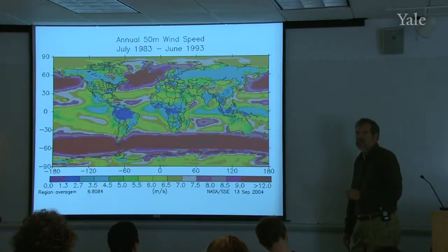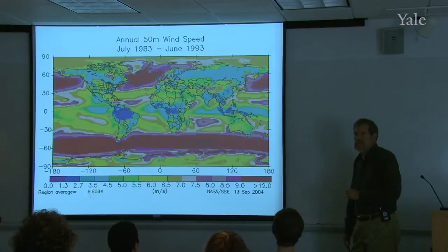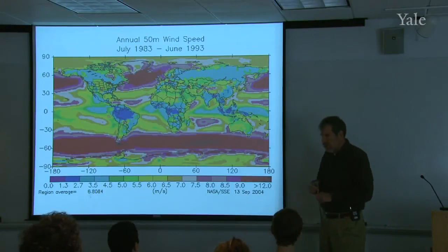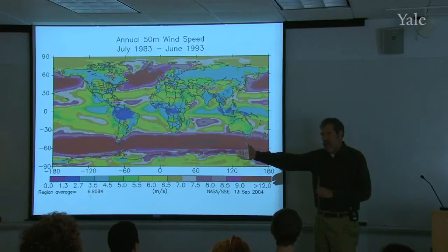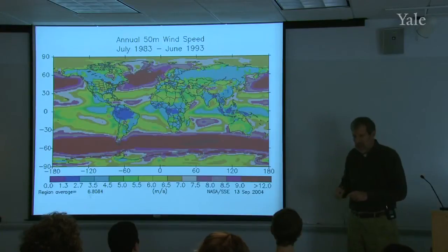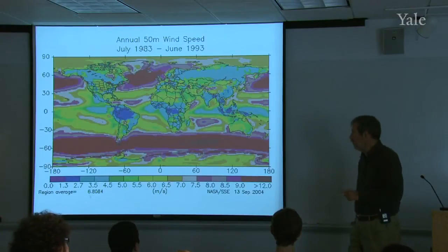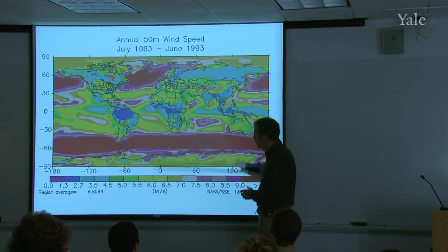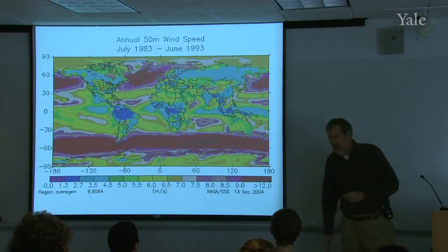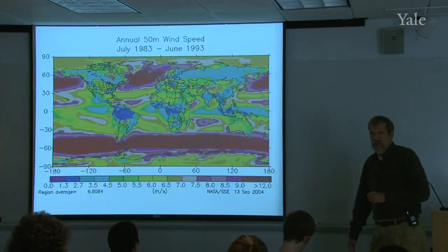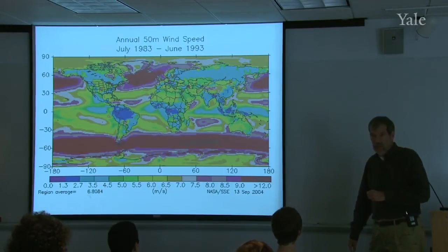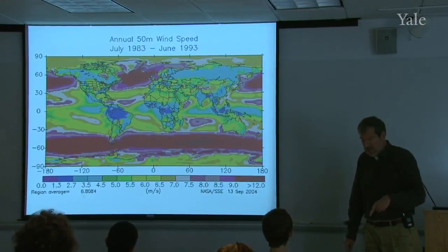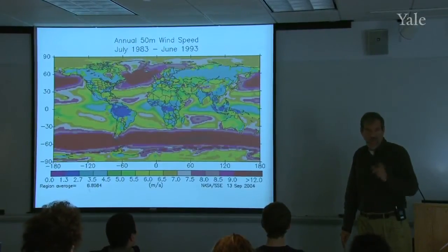They do slow down the wind locally. Usually it'll recover within a few tens of kilometers downwind. That wind speed will recover once again. There have been a few studies to see whether massive wind farms would influence the climate of the Earth. And the answer is probably not. But they do have a local influence on wind. In fact, in just a moment, when we're talking about how to design a wind farm, we'll have to take that into account.